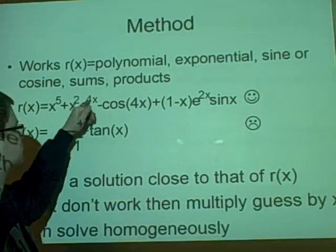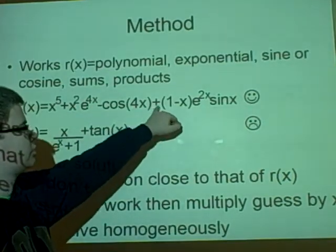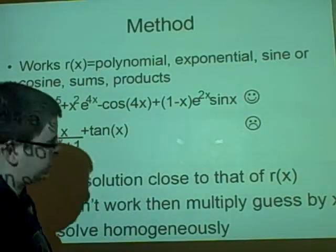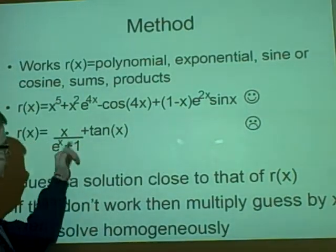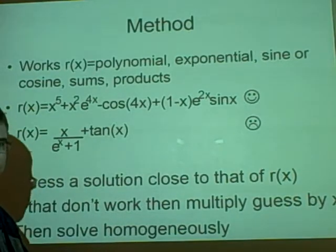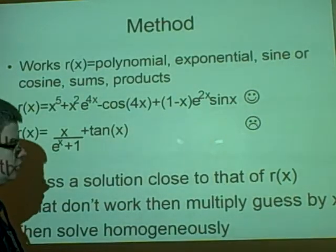So x^5 + x^4*e^(4x) - cos(4x) + (1-x)e^(2x)*sin(x), we can do that. But we can't do anything like this, which is a division, and it's a tan. We don't like tans, we can't do them. So x/(e^(2x)+1) + tan(x), we can't do that.